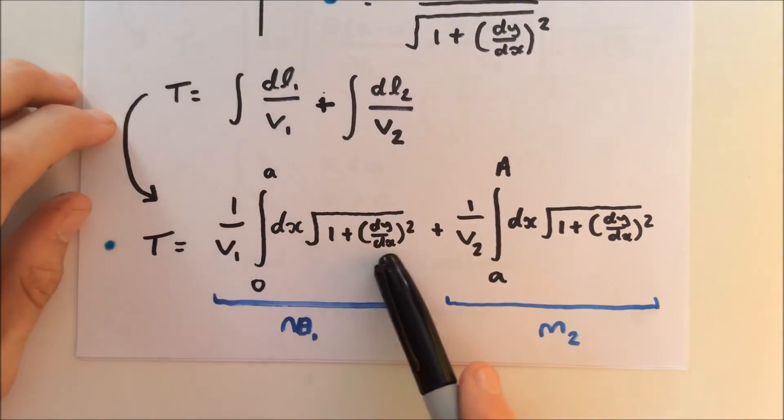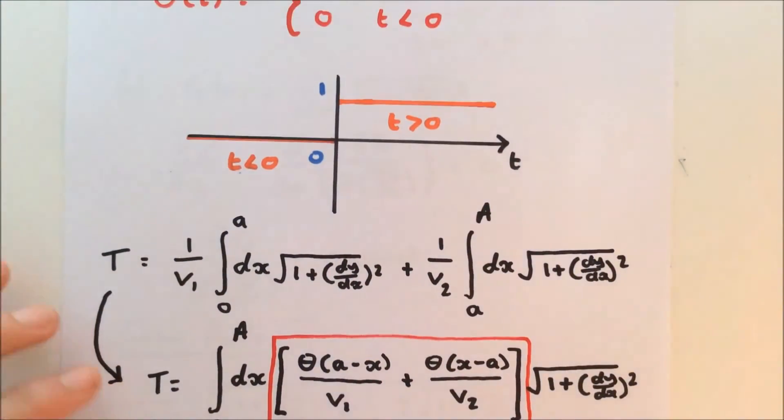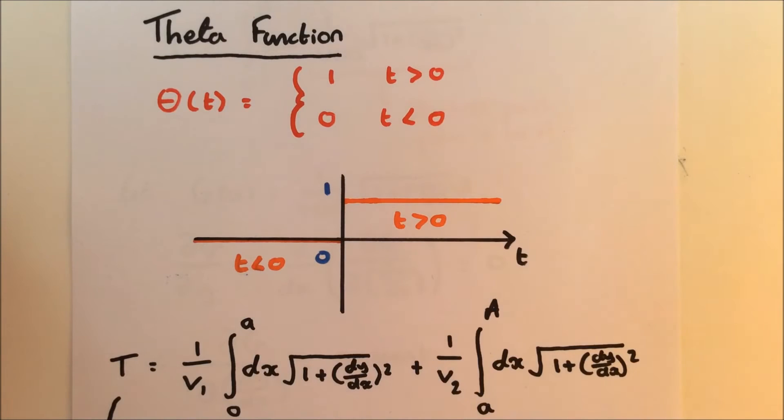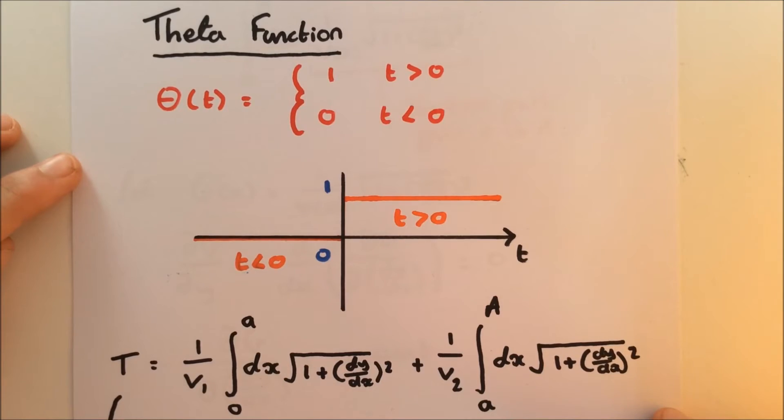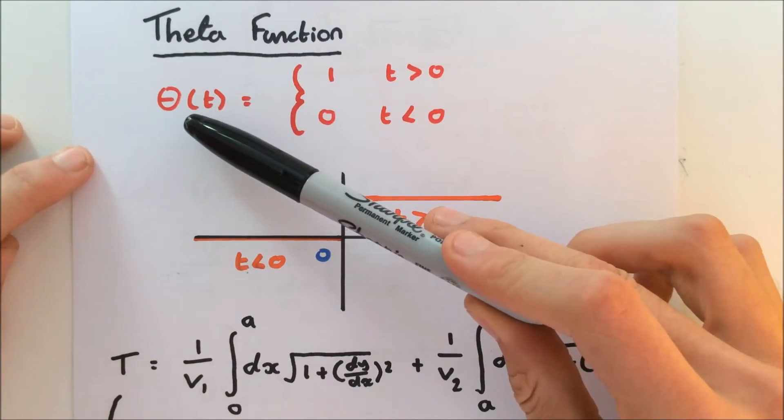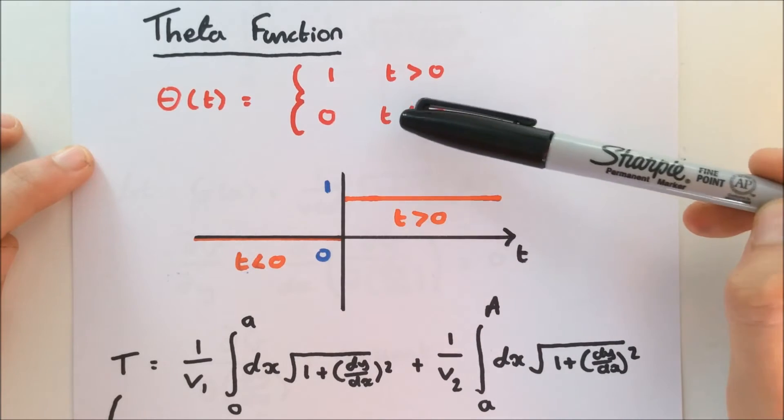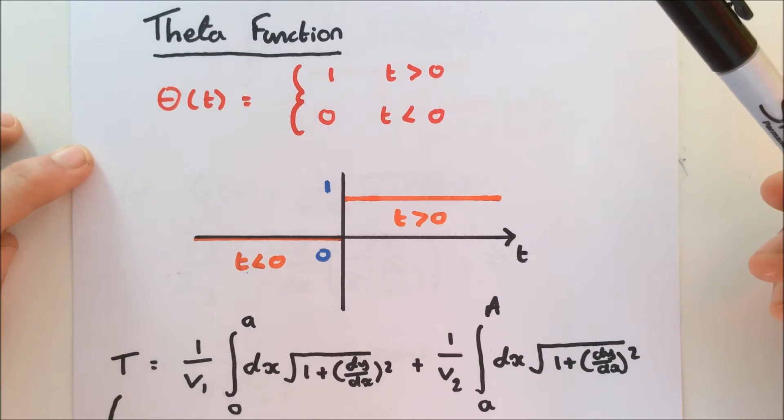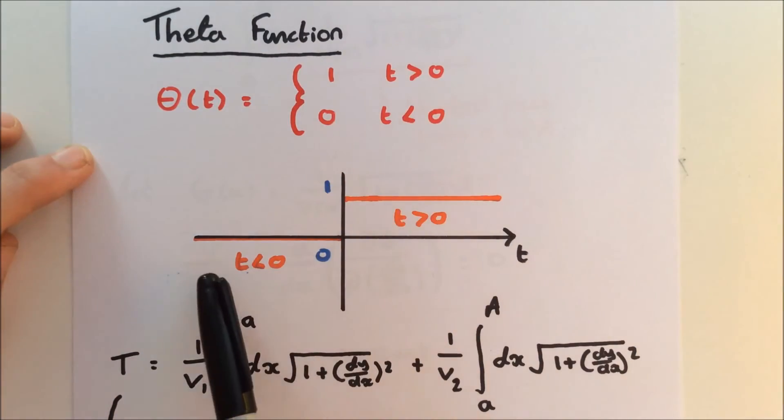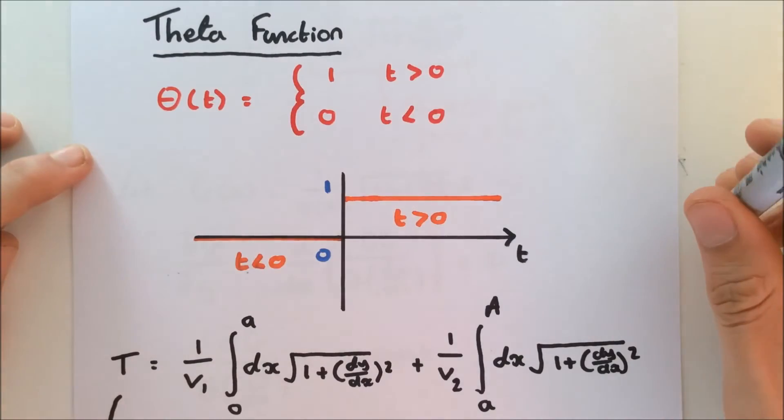And as established, this is medium 1 and that is medium 2. Now, we're going to have a quick mathematical interlude, and we're going to look at the theta function, because we want to combine our velocities. Velocity 1 and velocity 2, of course, are different. So the theta function is a step function. And here's an example: theta, which is a function of t, is equal to 1 if t is greater than 0, or 0 if t is less than 0. So it's like a switch, in other words. And here we have a diagram to show it visually.